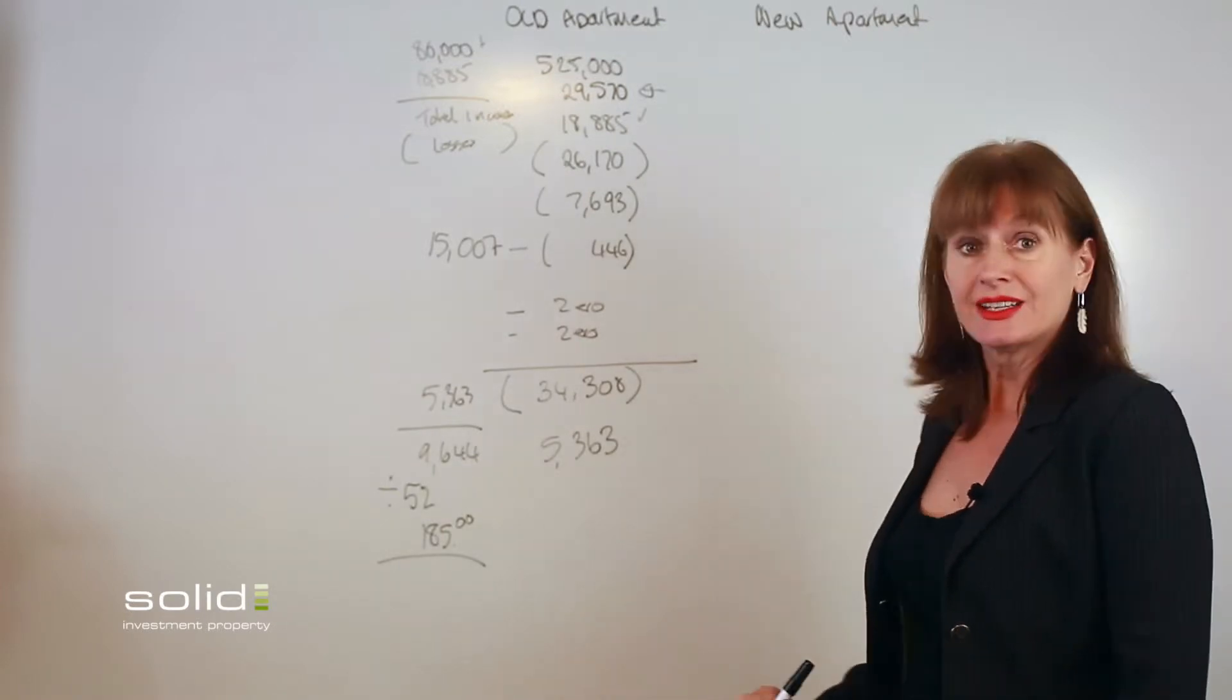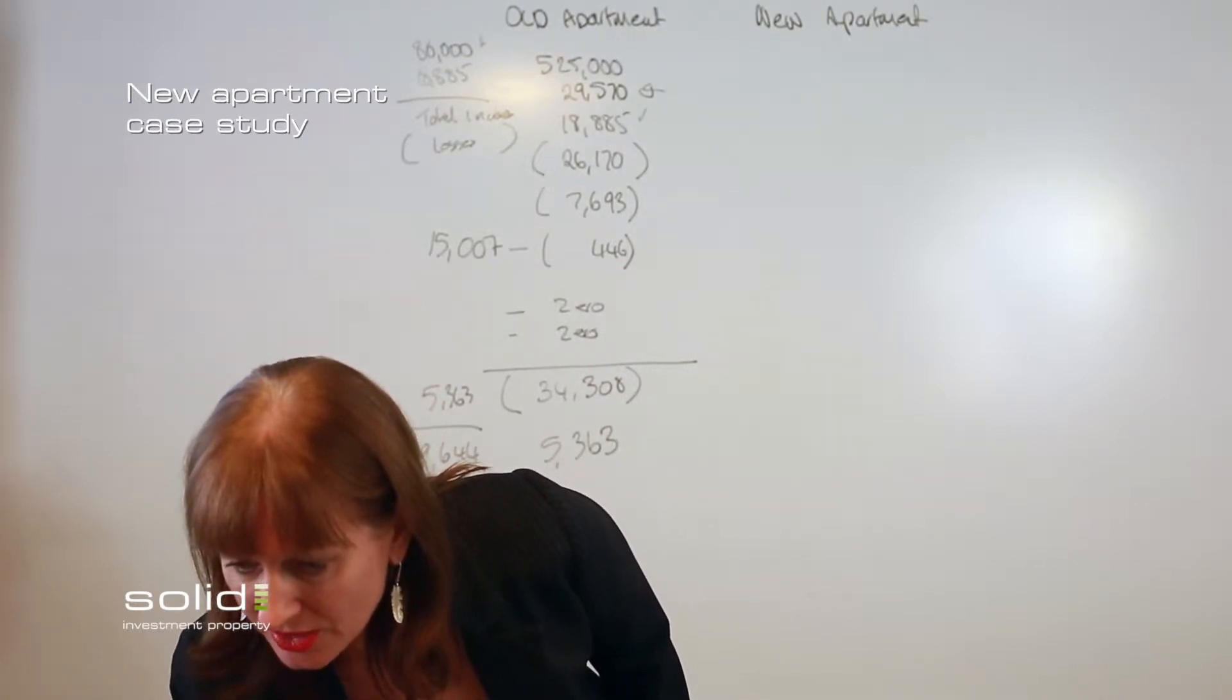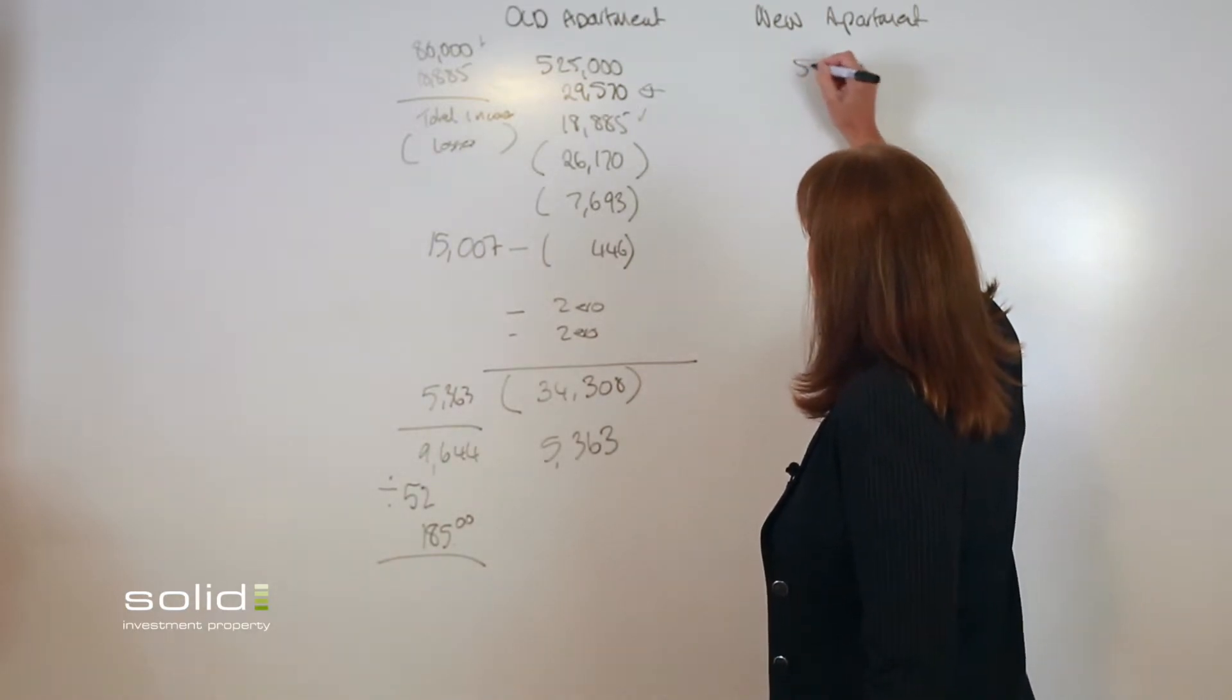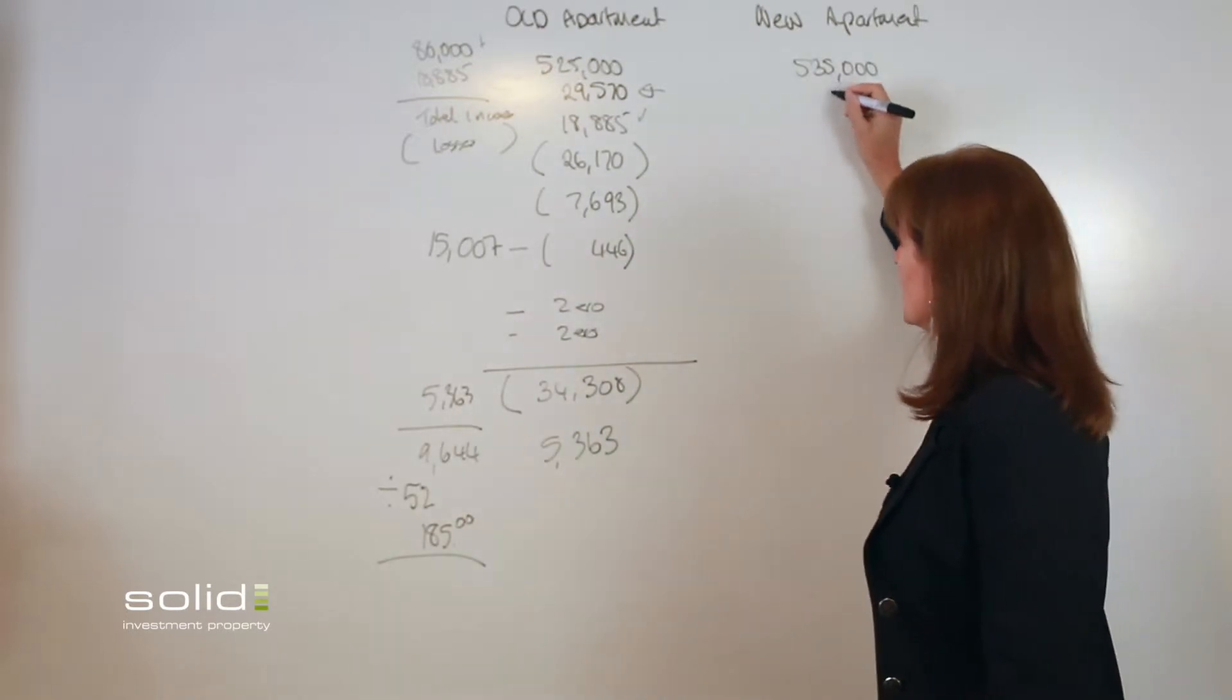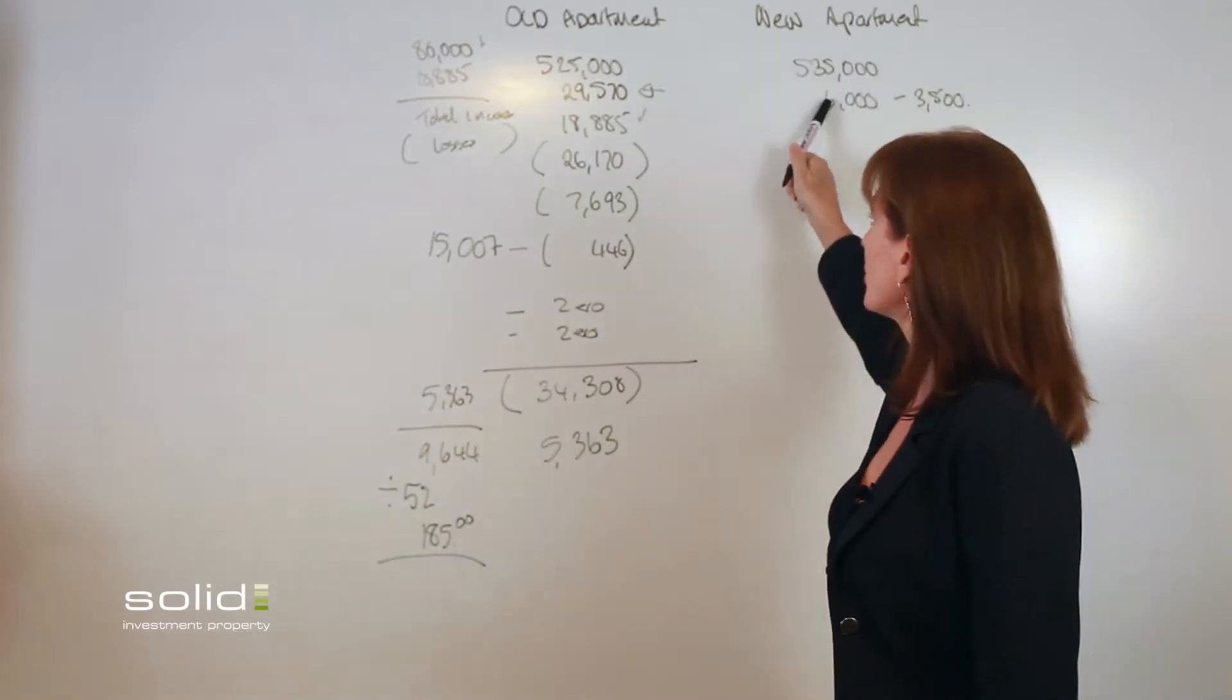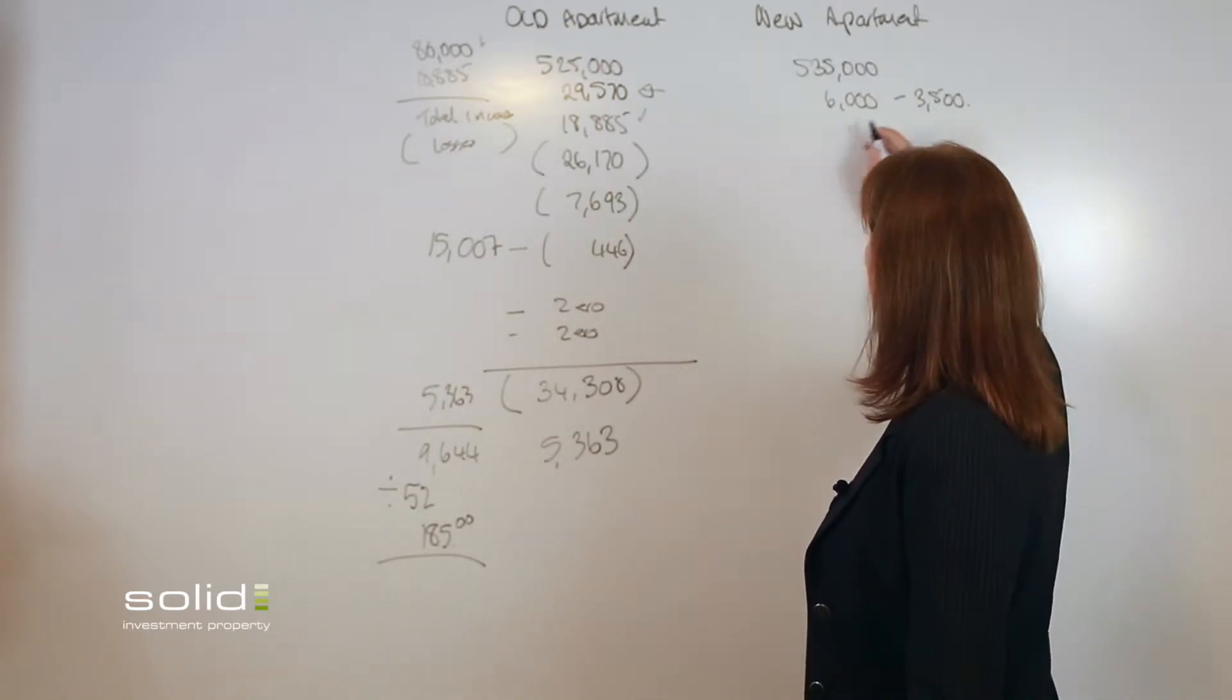Okay, now let's look at the other property. So I've done all the figures up here. Now this property was a little bit more money. It's the closest I could find. Now we sold this property off the plan about July last year. The purchase cost was $6,000—in that is $3,500 of stamp duty. So you've got a huge, you can see your purchase cost: $29,570 versus $6,000.